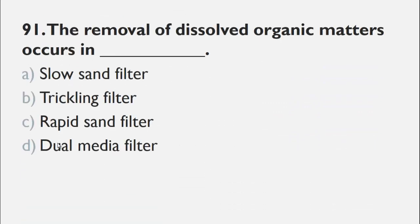MCQs number 91 is, the removal of dissolved organic matter occurs in a slow sand filter, b trickling filter, c rapid sand filter, and d dual media filter. The removal of dissolved organic matter occurs in b trickling filter.